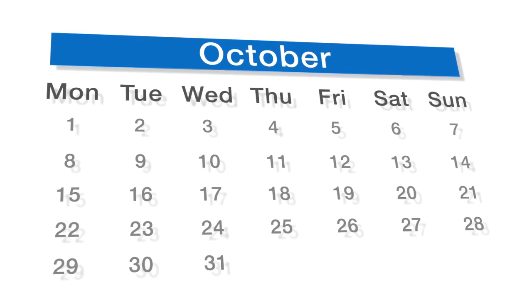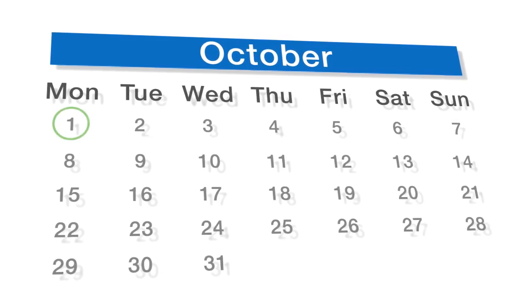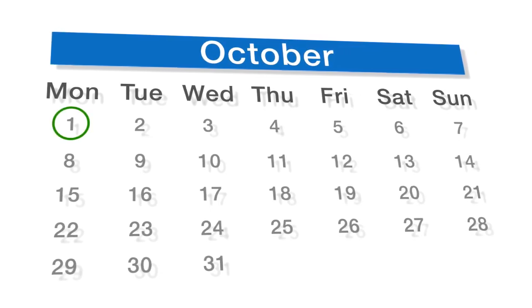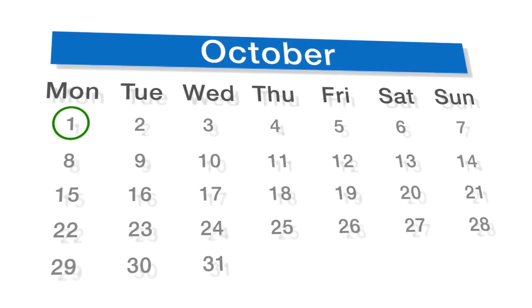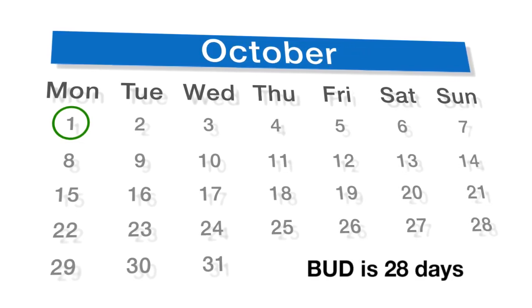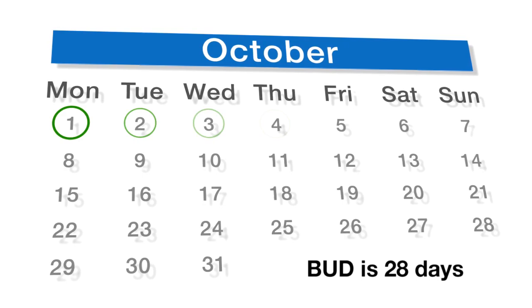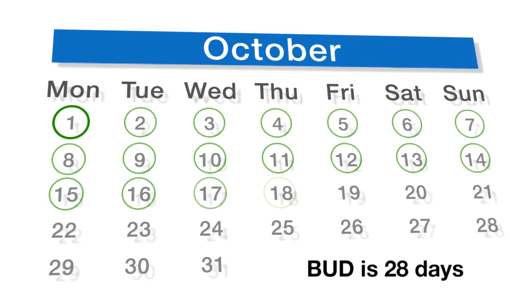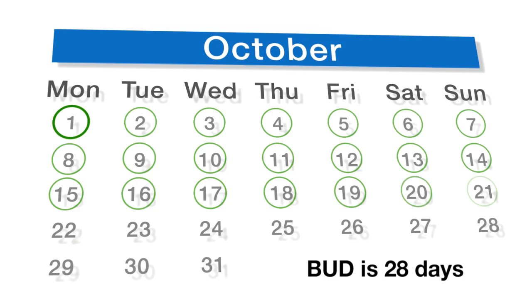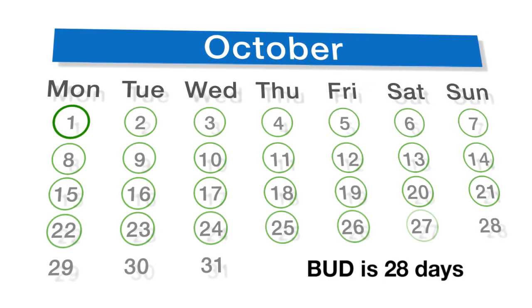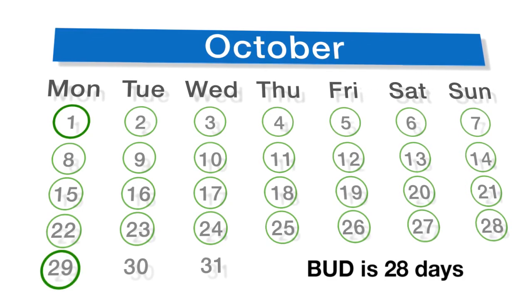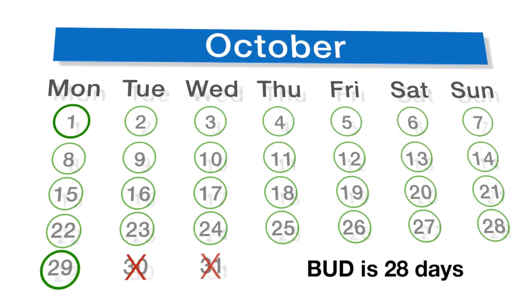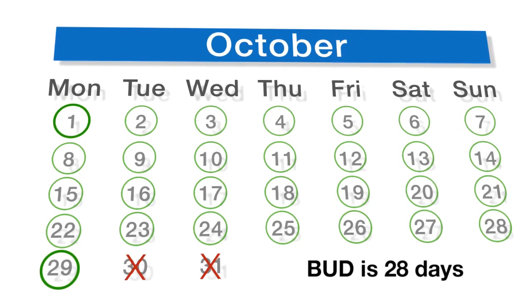Here's an example. A multi-dose vial of Afluria brand of influenza vaccine was first entered on October 1st. The product information indicates the BUD is 28 days after the vial is first entered. The BUD for this multi-dose vial of Afluria is October 29th.